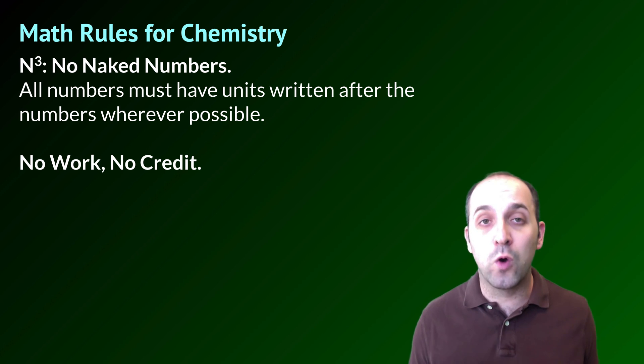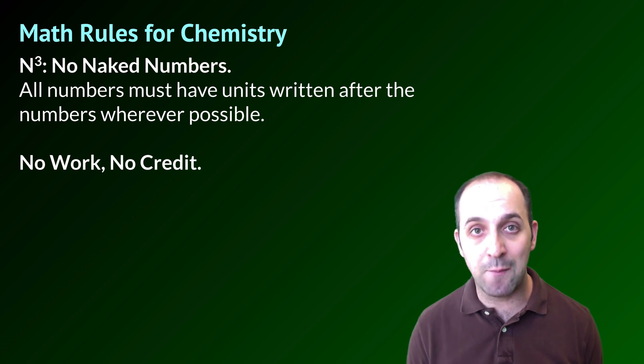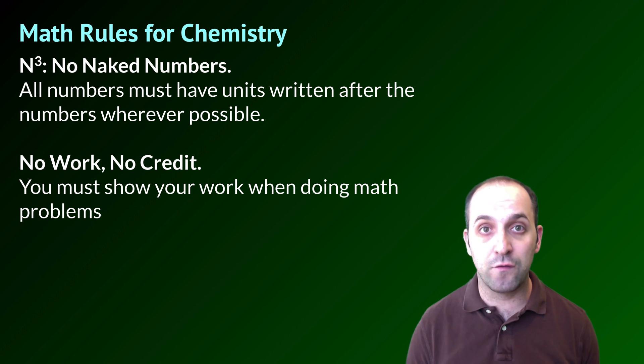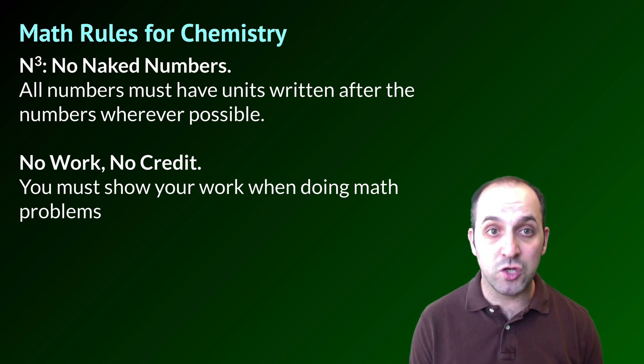The next rule is the no work, no credit rule, which you probably understand, but let's go over it just to make sure. So that just means that you have to show your work when doing math problems. You want to put down the equation that you use. You want to substitute in the values that you're going to substitute in for before you put down the answer when you solve for a particular variable or whatever you think that answer is. We definitely want to see work wherever work needs to be shown.